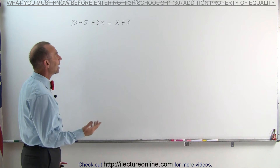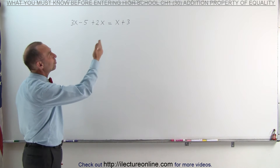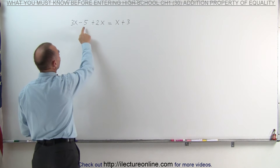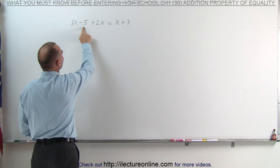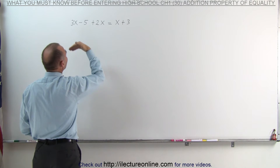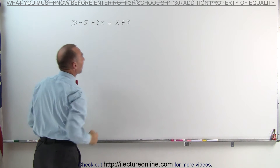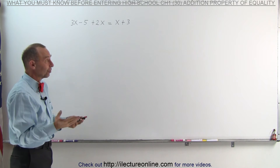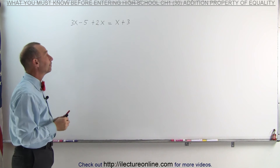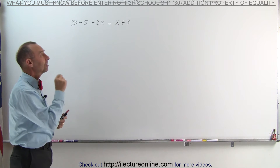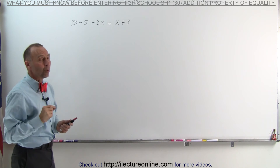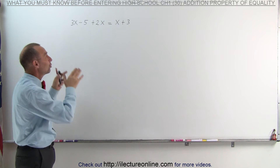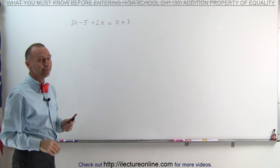One way is to use what we call the addition property of equality. In other words, if I want to get rid of the minus 5 on the left side, I could add a positive 5 to it, because minus 5 plus 5 equals 0 and then the number will be gone. But the addition property of equality says that whatever you do to the left side, you must do exactly the same to the right side.